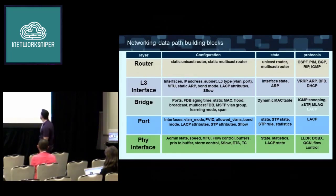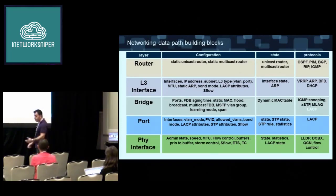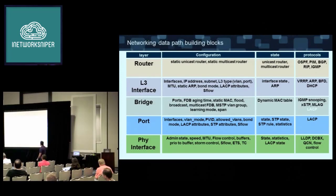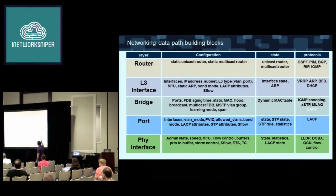The next layer is the bridge. In the bridge we have the FDB and MSTP configuration, spanning tree itself. We have dynamic MAC as state, and IGMP, XSTP running, and MLAG that we can add to a bridge — MLAG is the multi-chassis LAG. On layer three, the interfaces are the router port interfaces, where we have the IP and subnet of the interface. VRP and DHCP are protocols that can run on that layer. And on top of it we have the router, which has all the static and dynamic FDB, and all the routing protocols are correlated with this layer.